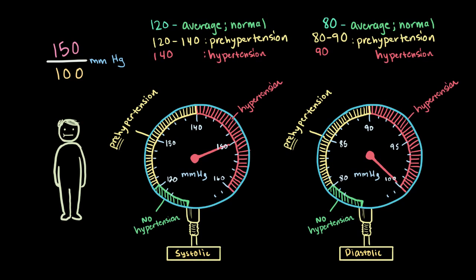So, to be more specific though, that would be considered this stage 1 hypertension, which is this zone on the systolic side from 140 to 160. And then over here on the diastolic side, from about 90 to 100.